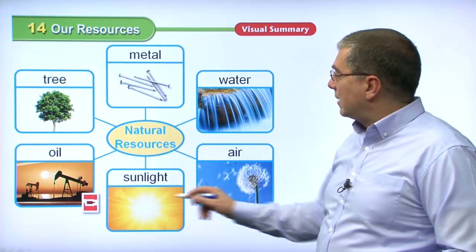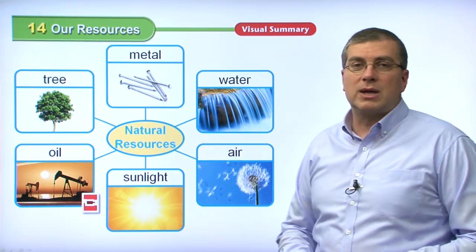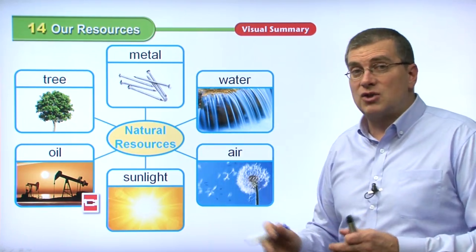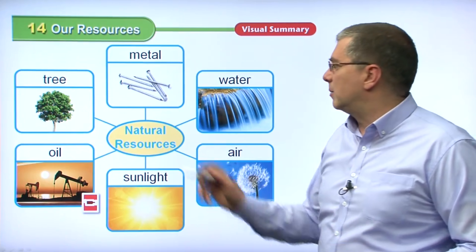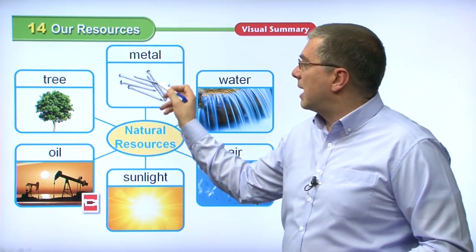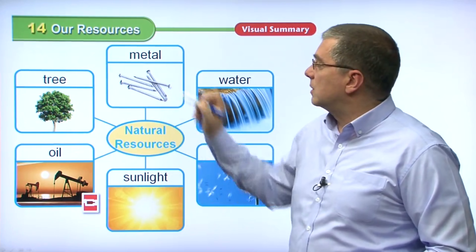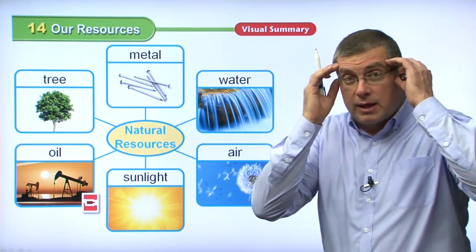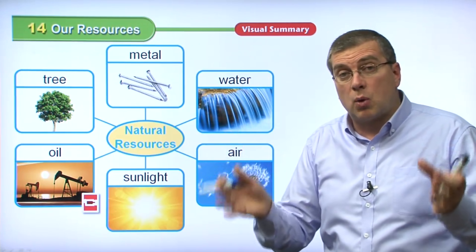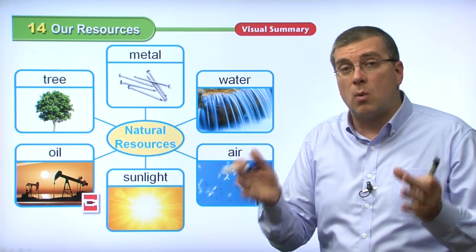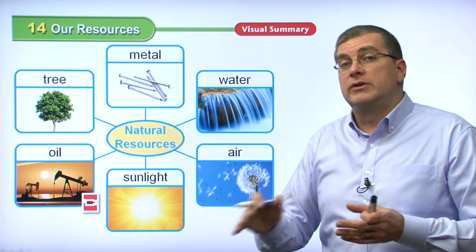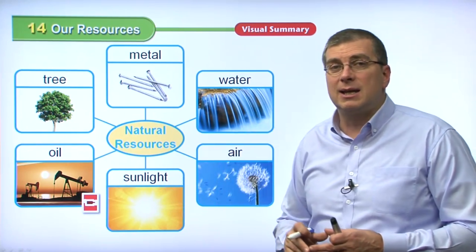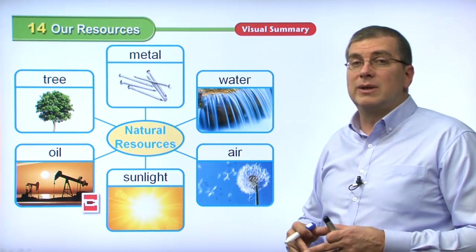So these are all natural resources — things we use to make other things. For example, we can find metal in the ground in nature, but we modify it a little to make it pure and to make certain products from it, like nails. Another important natural resource is water. Water comes from nature; it's very important for us to live. We cannot live without water — we need it to drink and to grow our crops. So water is a very important natural resource; we should keep it clean, not waste it, and if we can, reuse and recycle it.